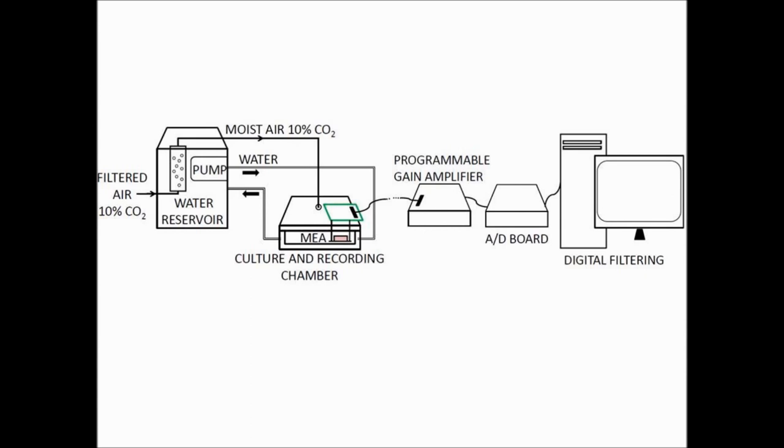This is a schematic representation of the whole system. A heating bath guarantees the temperature control inside the environmental chamber, while a CO2 gas cylinder and the humidifying module maintain a physiological pH and osmolarity.